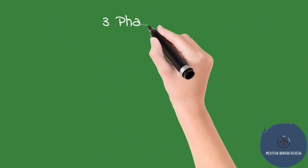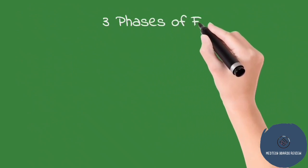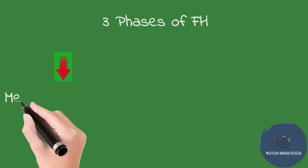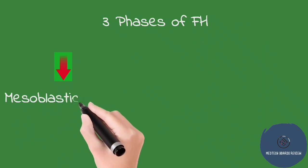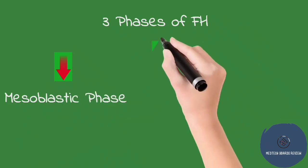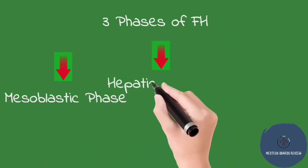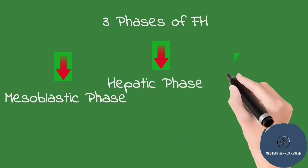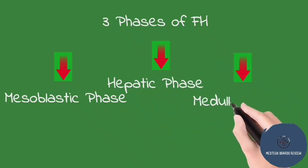Now, let's move on to the three phases of fetal hematopoiesis. The first phase is the mesoblastic phase. The second phase is the hepatic phase. And the last phase is the medullary phase. These are the phases arranged chronologically. So let's have an in-depth discussion of the three phases.